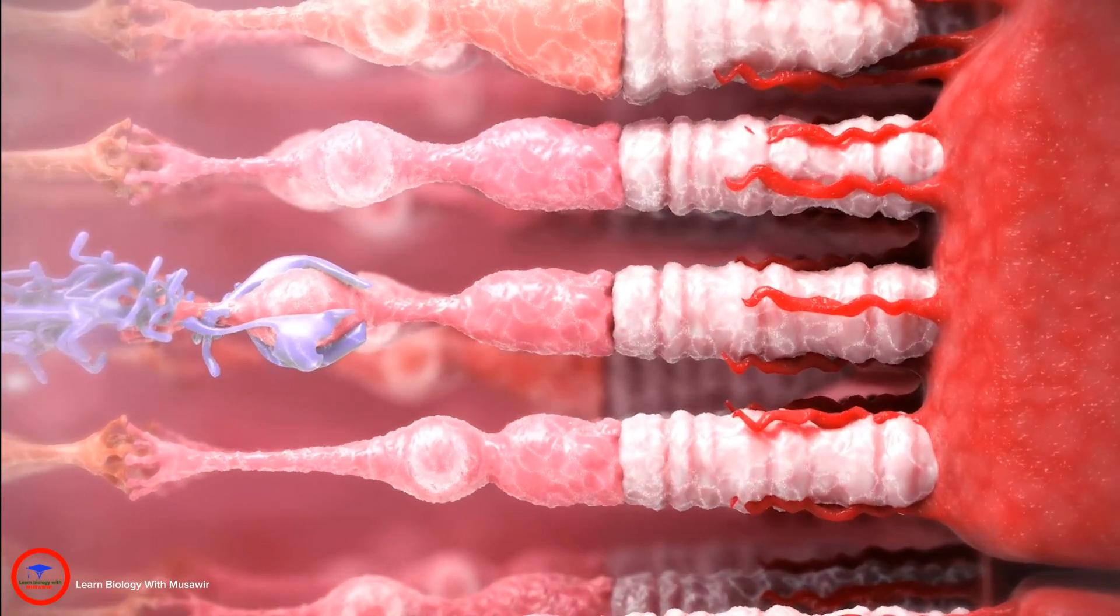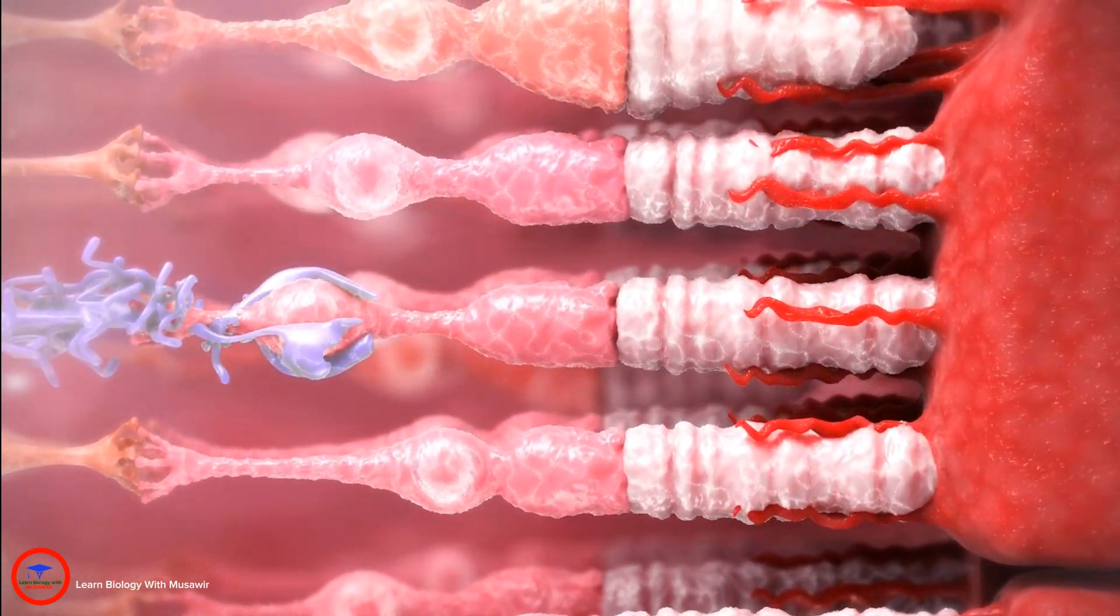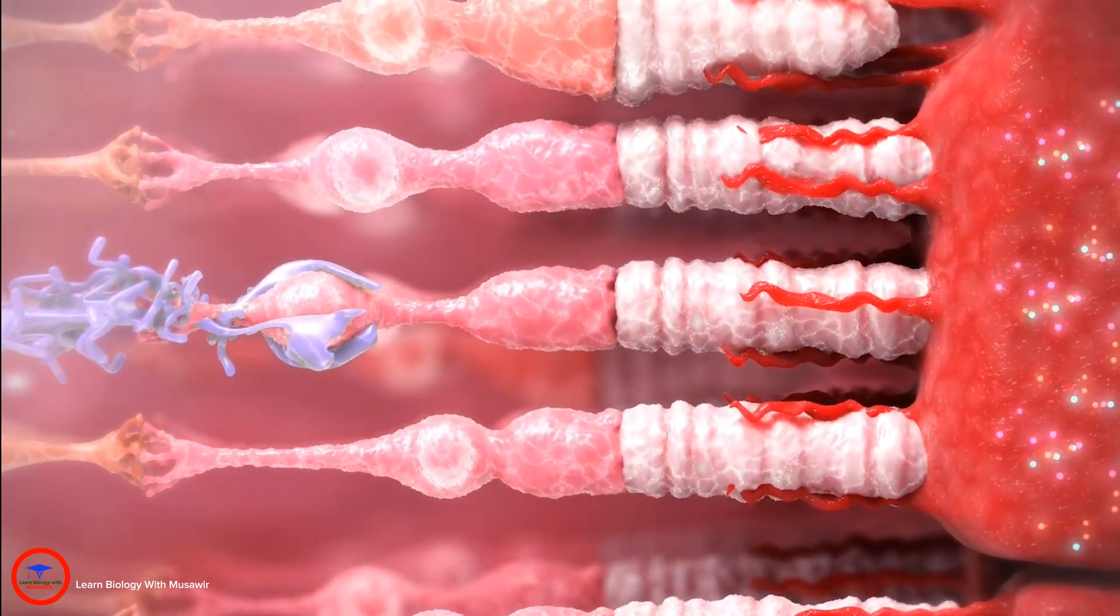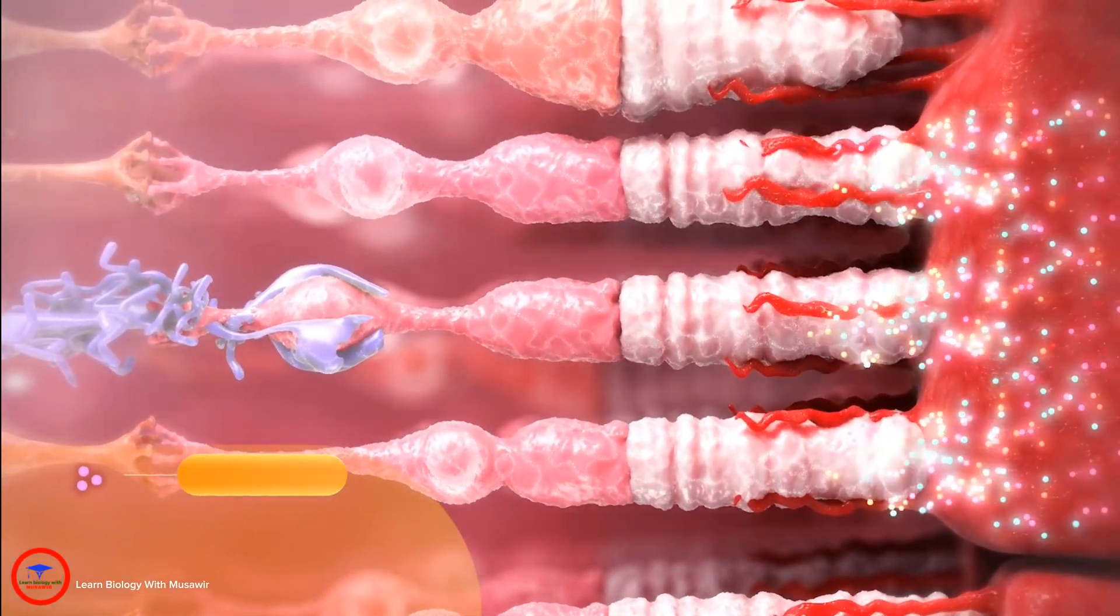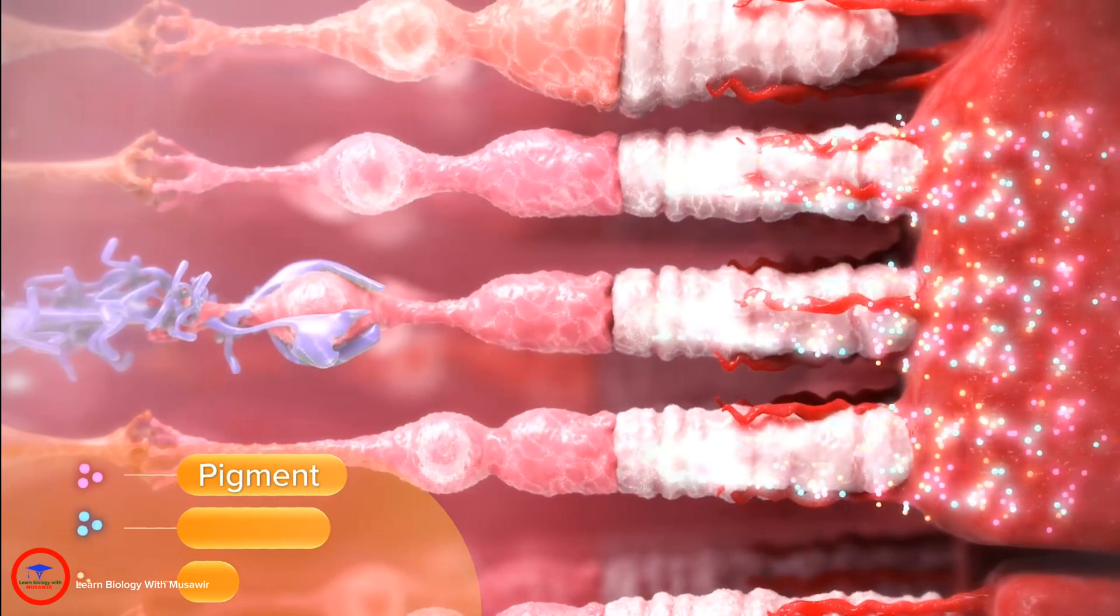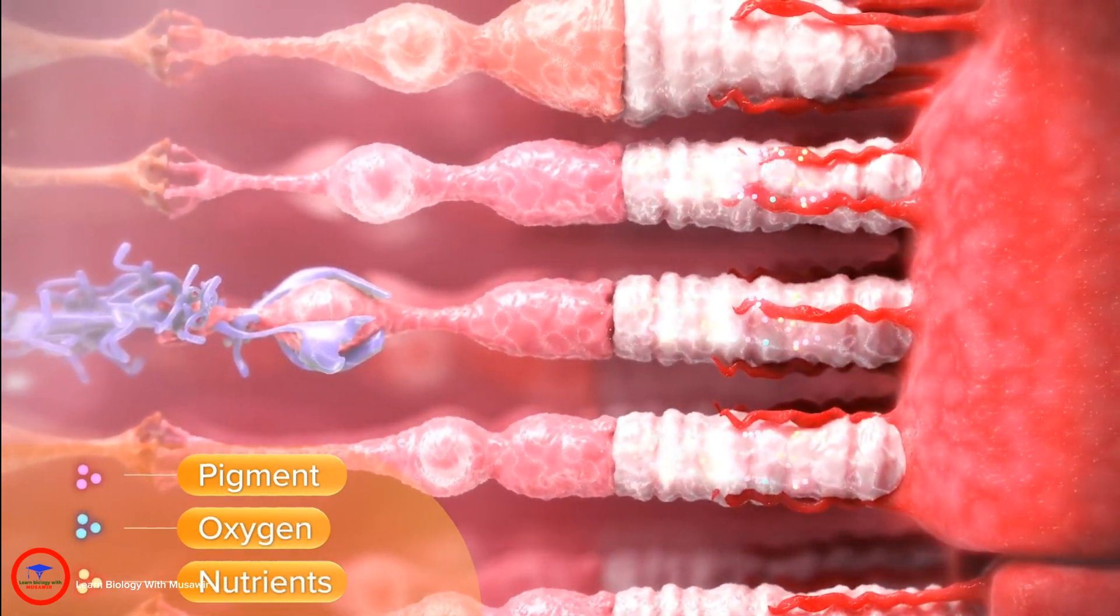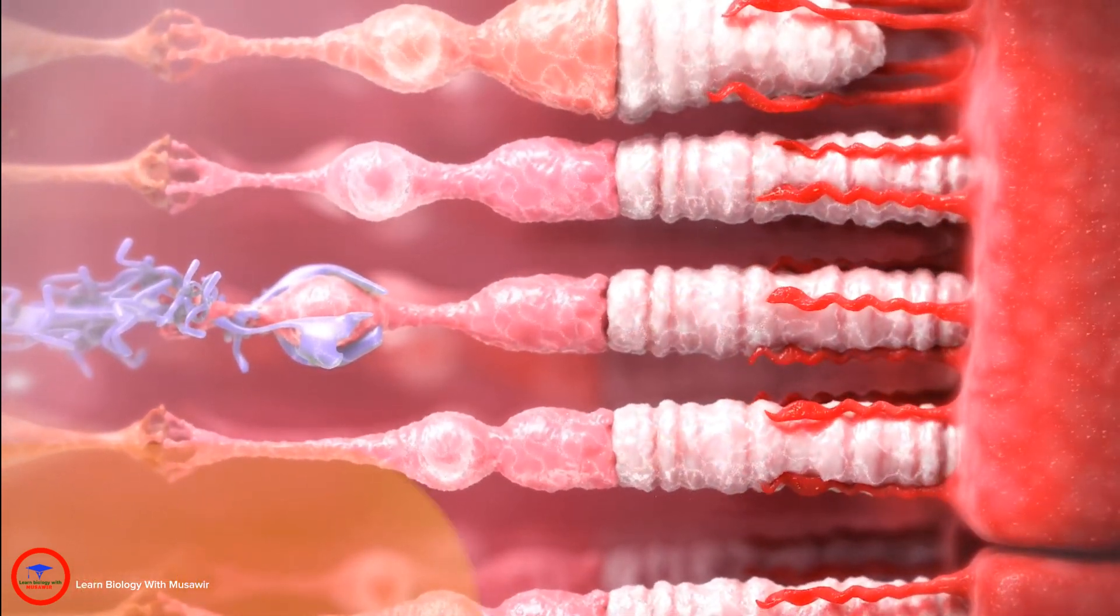The RPE is a single cell layer that degrades the phagocytosed contents, recycles key elements of the light capturing pigment, and controls the supply of oxygen and nutrients to the photoreceptors so they can regenerate their outer segments.